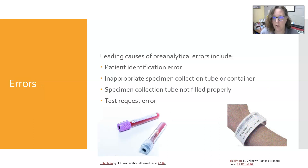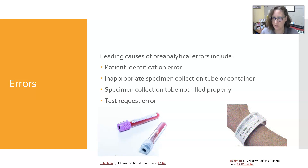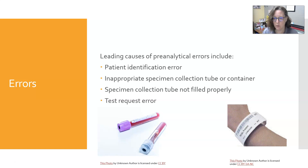The leading causes of pre-analytical errors include patient identification errors, inappropriate specimen collection tube or container — getting the wrong type of tube with the additives, and we're going to talk about the differences in the next video. The specimen collection tube not being filled properly is really important for having the proper anticoagulant-to-blood ratio to get accurate tests. And then test request errors — the wrong test ordered, ordered on the wrong patient, or for the wrong time.